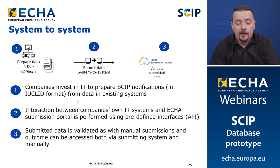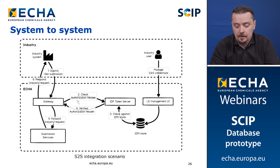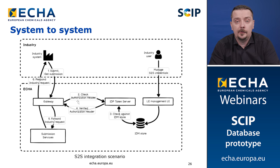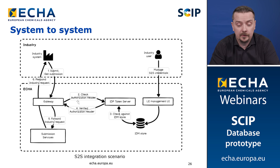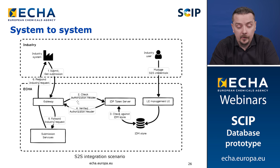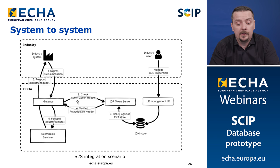Additionally, users can choose to go and view their submissions from the submission portal. In the system-to-system overview, it starts from the submitting of the dossier. Once the dossier has been submitted from industry, the authorization is checked to make sure the company submitting has the right to submit the dossier. After the validation, the dossier is submitted forward to the submission services, from where the polling mechanism will check if the response has been concluded and delivered back to industry.